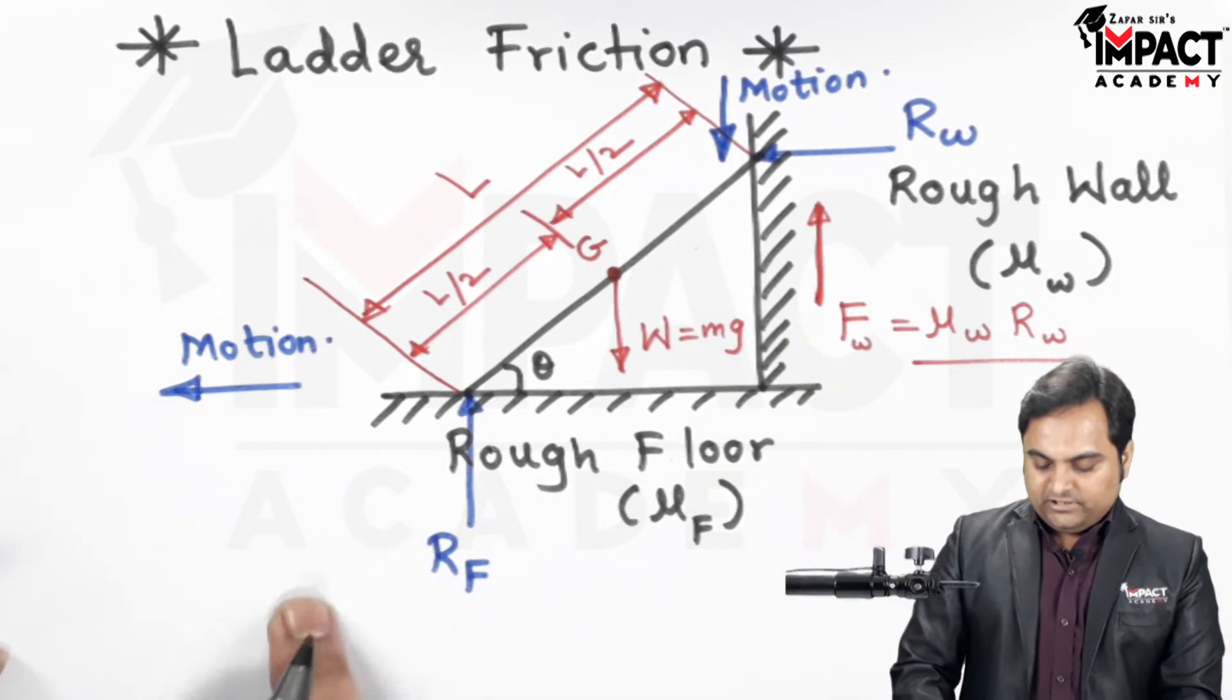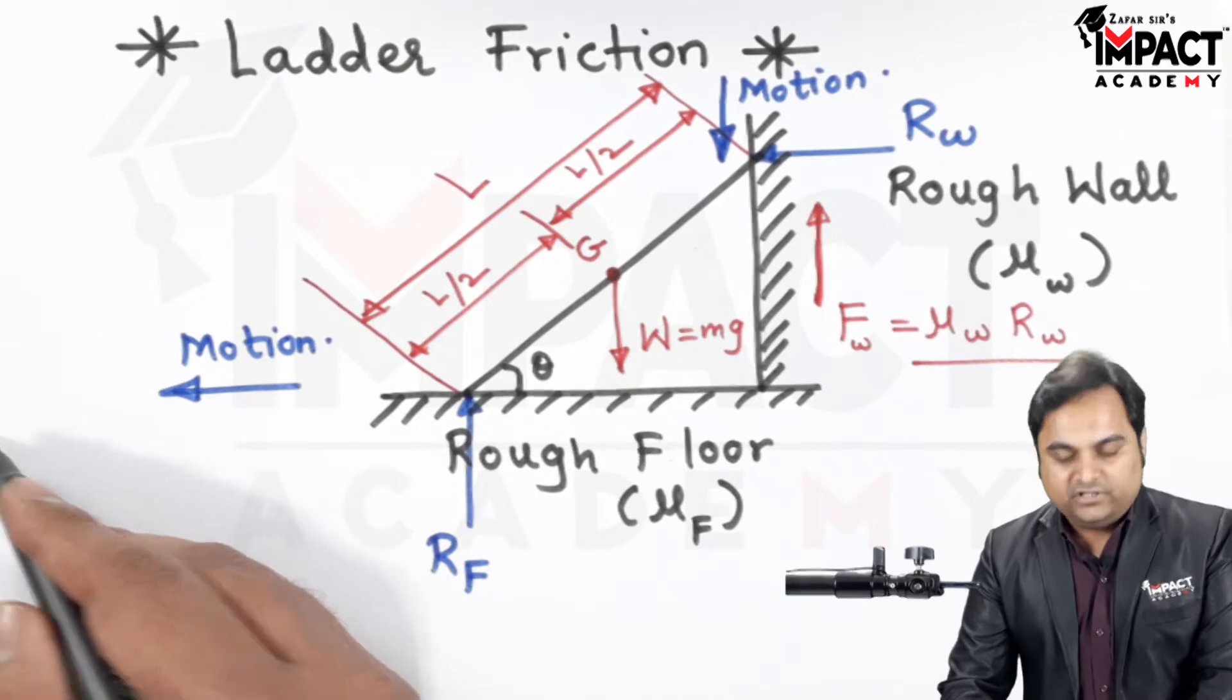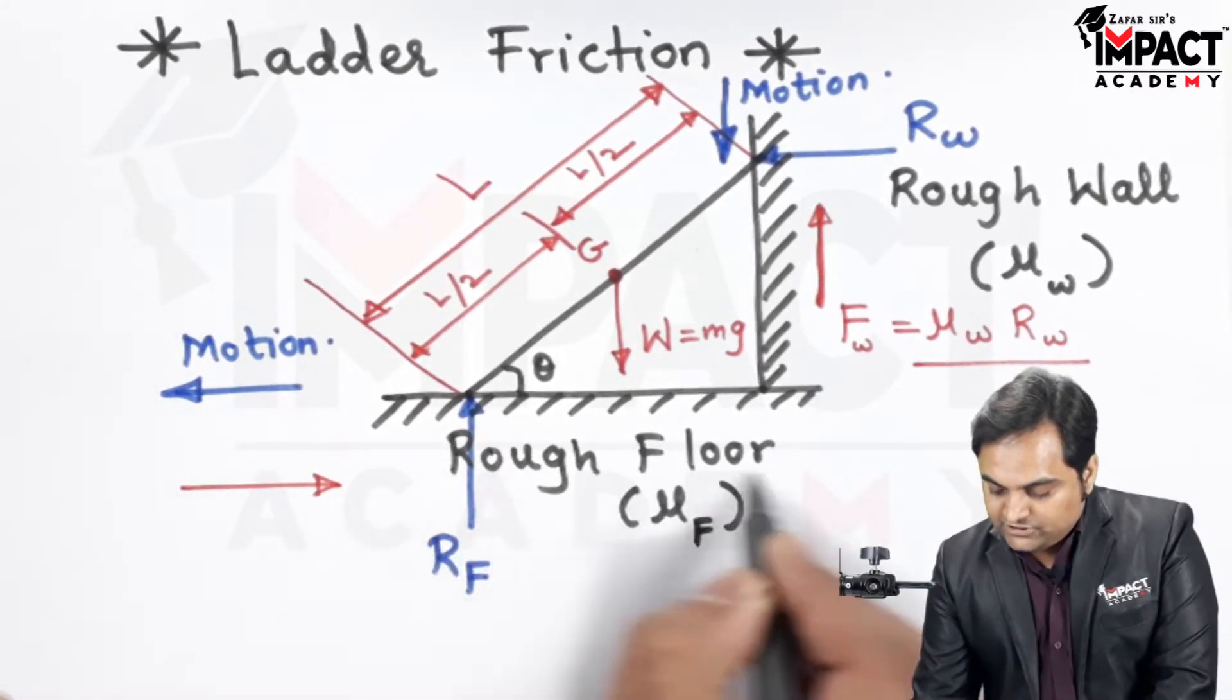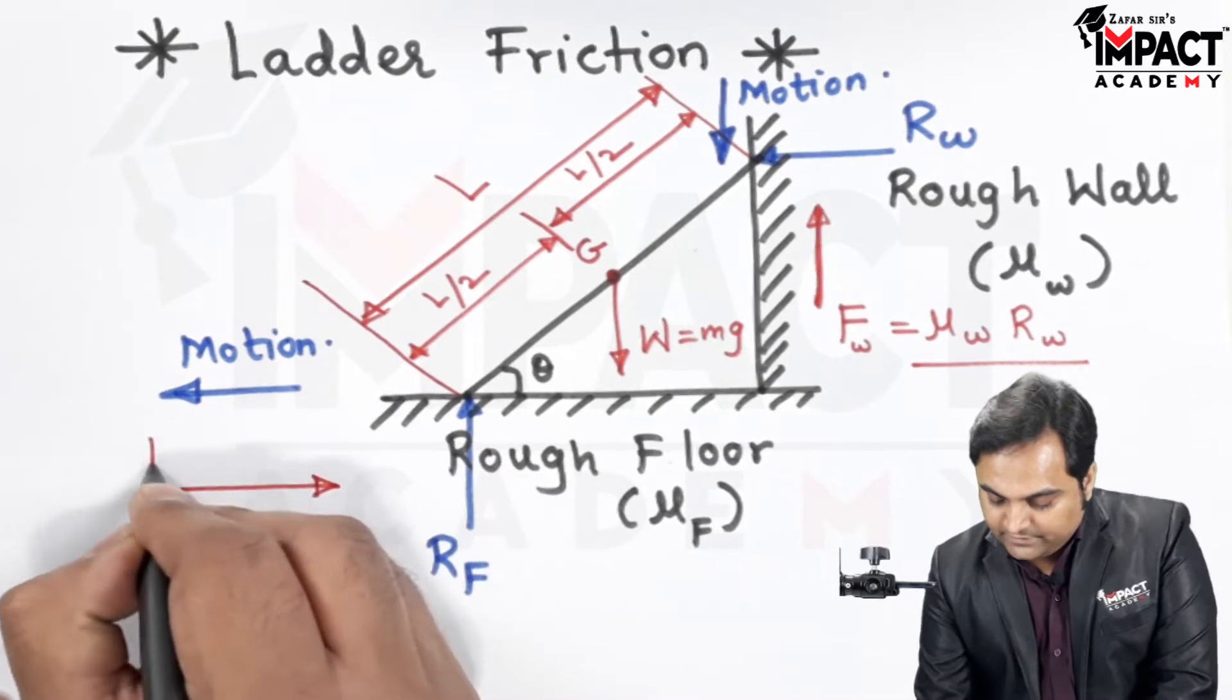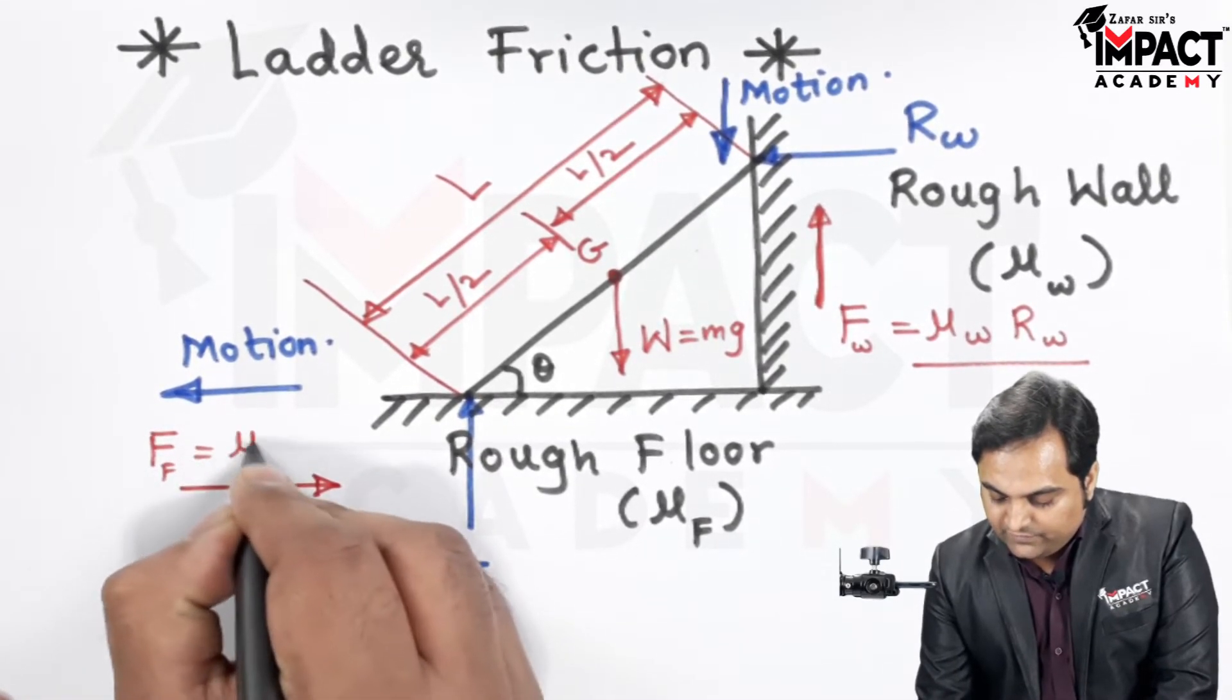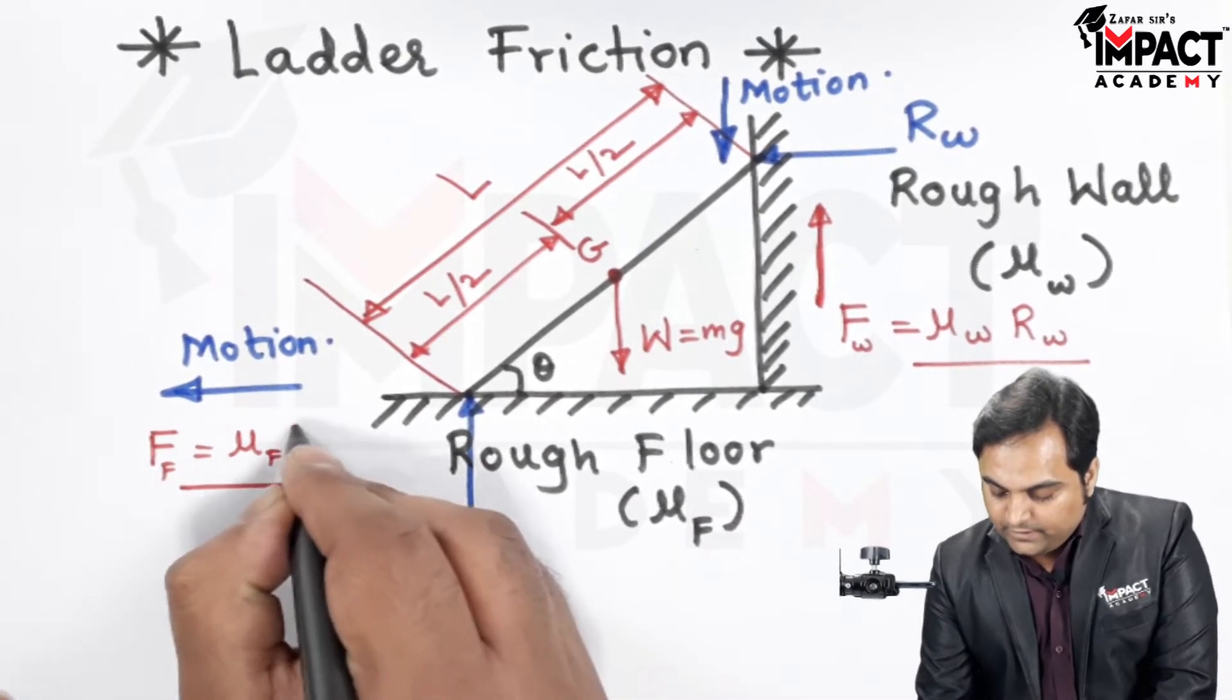Similarly, I'll get the force of friction offered by the rough floor. Since the motion of sliding is towards the left, so there will be a force of friction which would be acting towards right, and since it is by the floor, so F suffix f value is mu f, the coefficient of friction for the floor, into RF, the normal reaction offered by the floor.